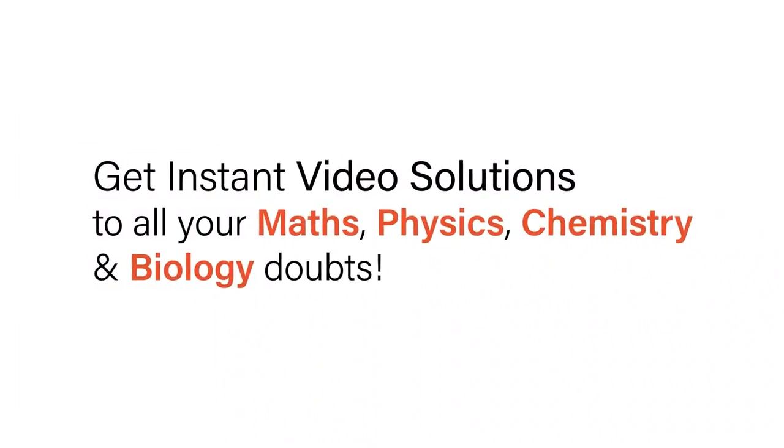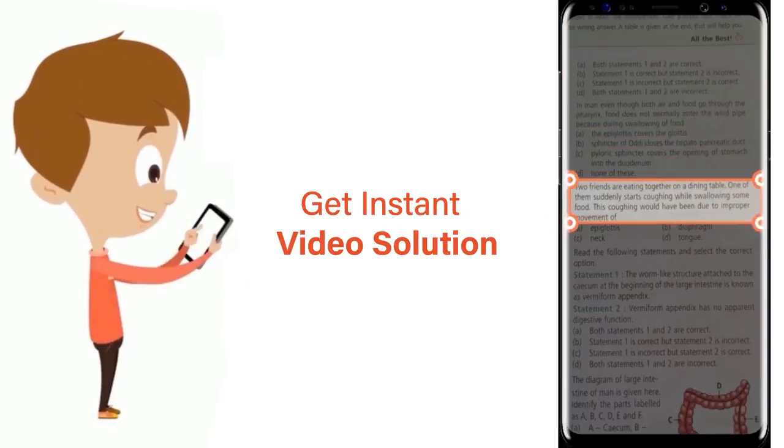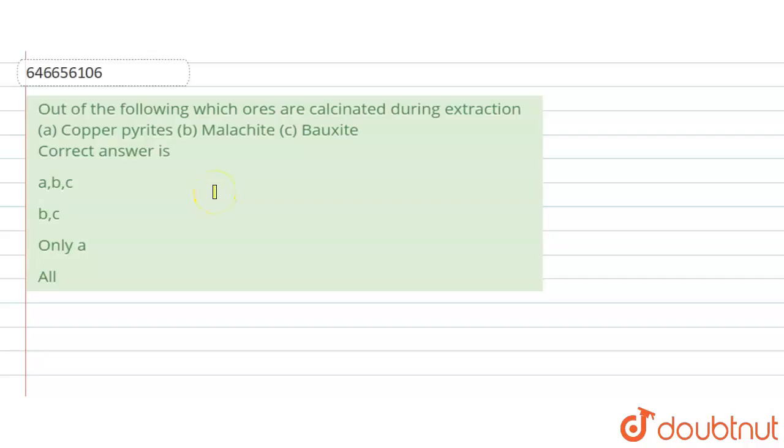With Doubtnet, get instant video solutions to all your maths, physics, chemistry, and biology doubts. Just click the image of the question, crop the question, and get instant video solution. Hi everyone, let's take a question. The question is: out of the following, which ores are calcinated during extraction - copper pyrite, malachite, and bauxite?